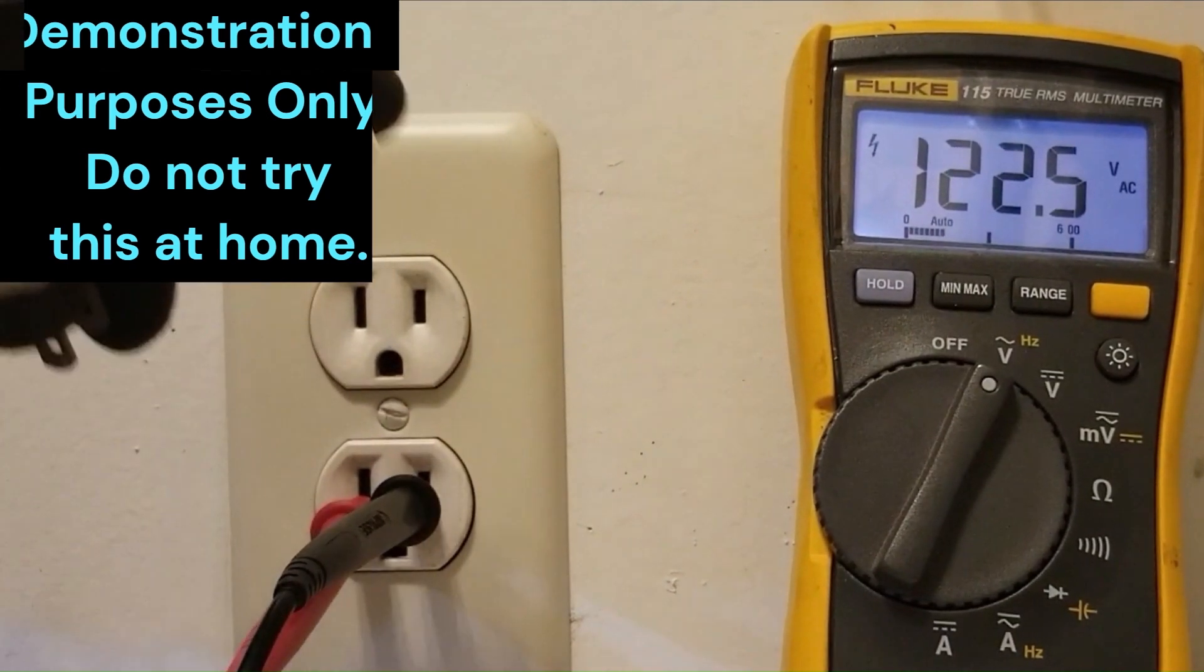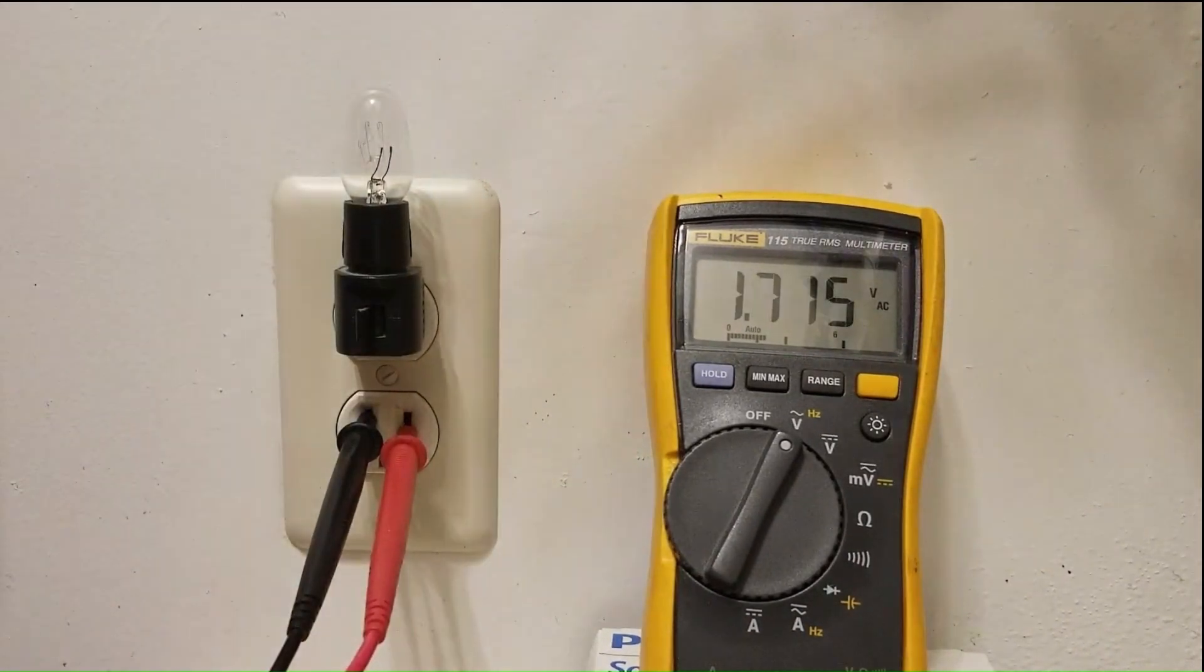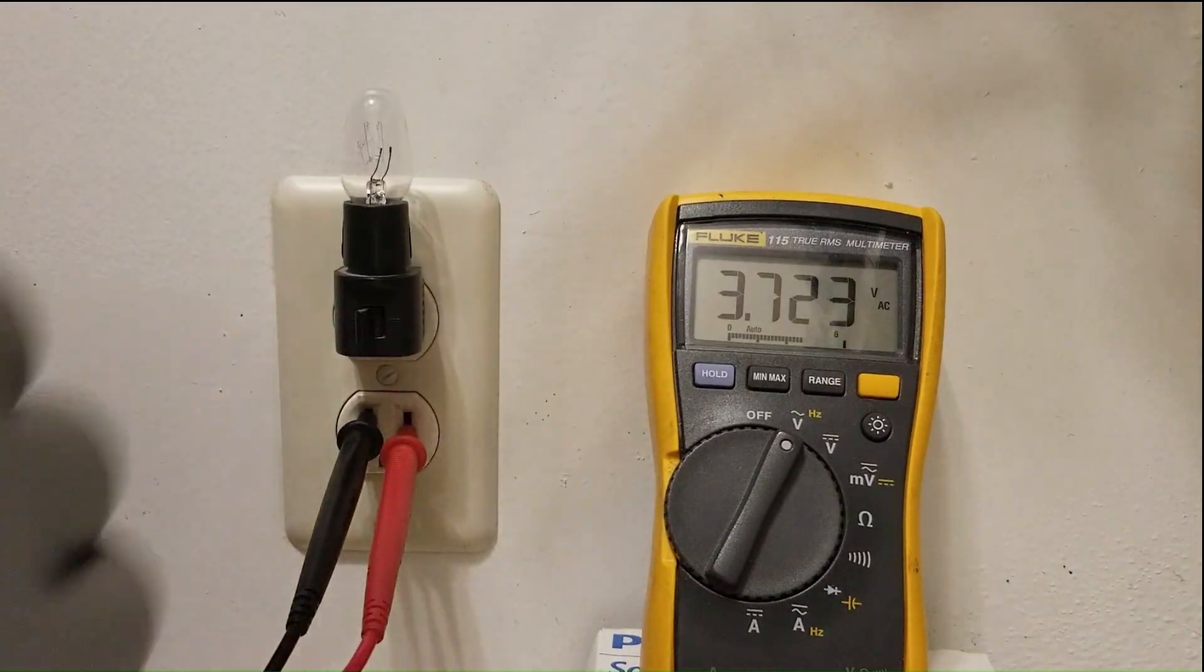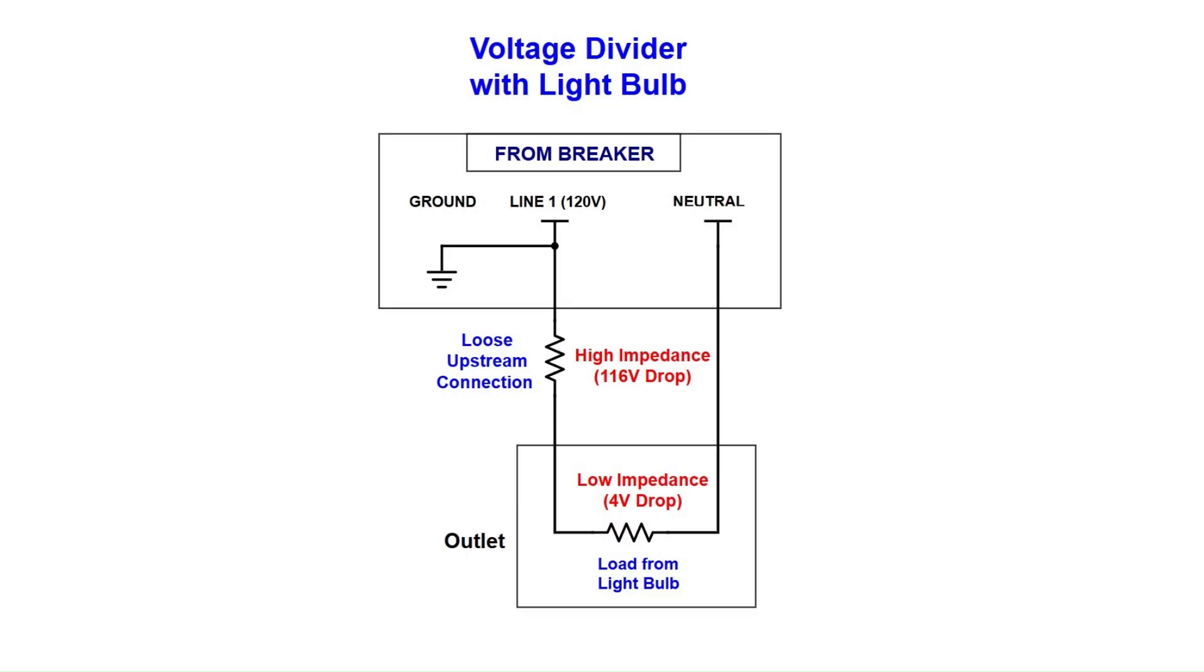In this outlet, I have purposely introduced a loose connection on the hot line. The resistance in this connection is high enough that when I plug in the light bulb, the voltage at the outlet drops significantly, rendering the outlet, for all practical purposes, non-functional. This happens due to a concept known as a voltage divider.